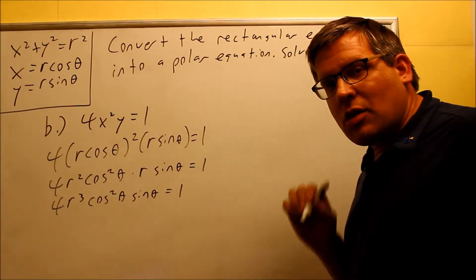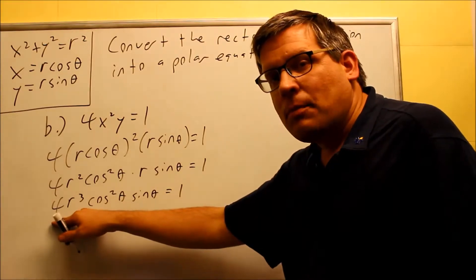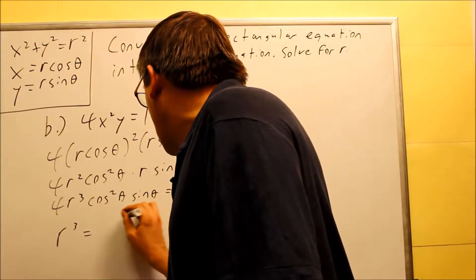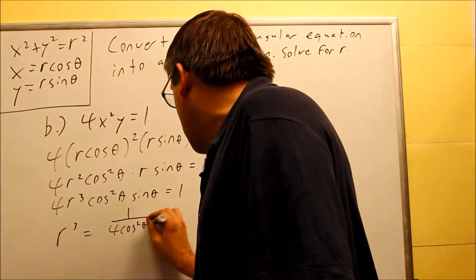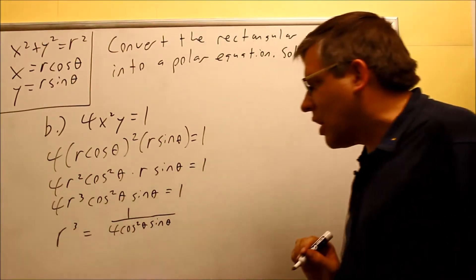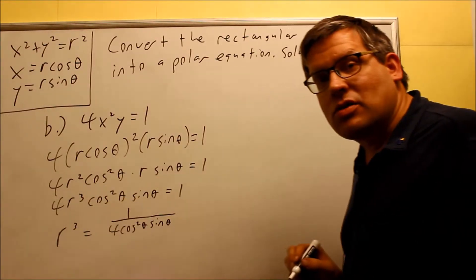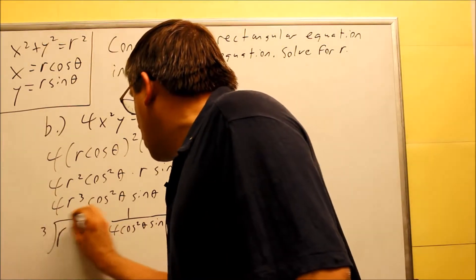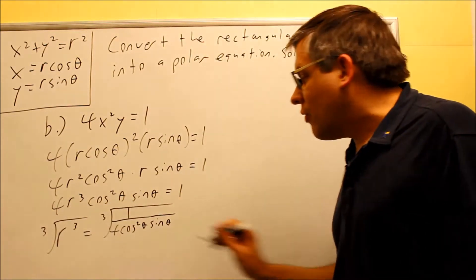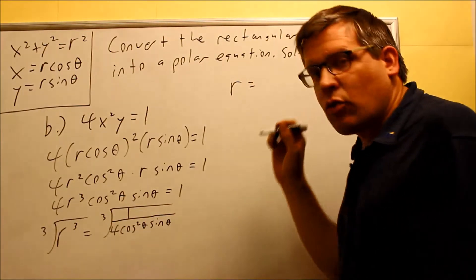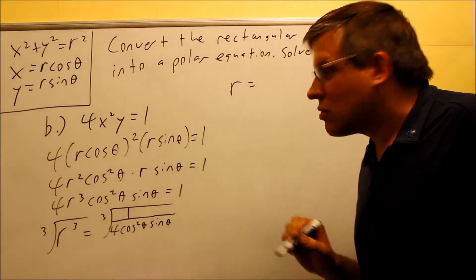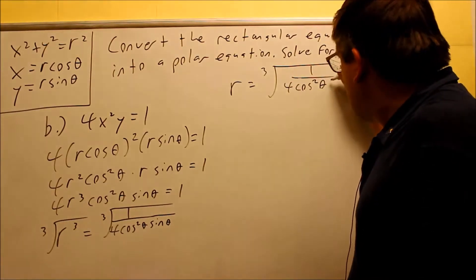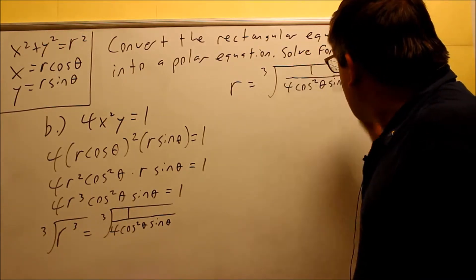To get the r's together, r squared times r gives r cubed. So we have 4r cubed cosine squared theta sine theta equals 1. To solve for r cubed, I divide both sides by 4 cosine squared theta sine theta, which gives r cubed equals 1 over 4 cosine squared theta sine theta. Then I take the cube root of both sides to get r by itself. Since it's an odd root, I don't need a plus or minus.